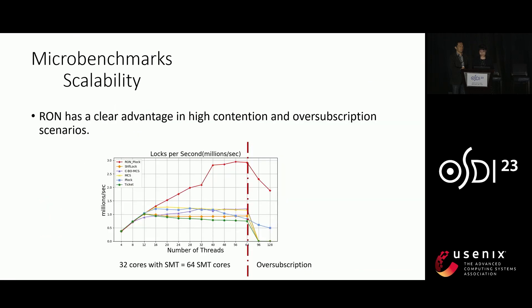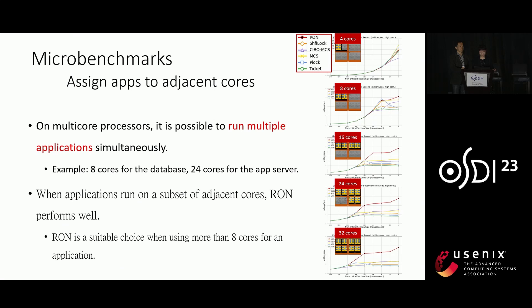In scenarios characterized by high contention and over-subscription, RUN demonstrates a clear advantage, as depicted with the X-axis representing the number of running threads and the Y-axis representing the number of lock acquisitions in millions per second. When running multiple applications concurrently on multi-core processors, it is common to assign specific cores to each application — for instance, dedicating 8 cores to a database and 24 cores to an application server. RUN demonstrates excellent performance when applications are executed on a subset of adjacent cores, making it a favorable option especially when utilizing more than 8 cores for a single application.